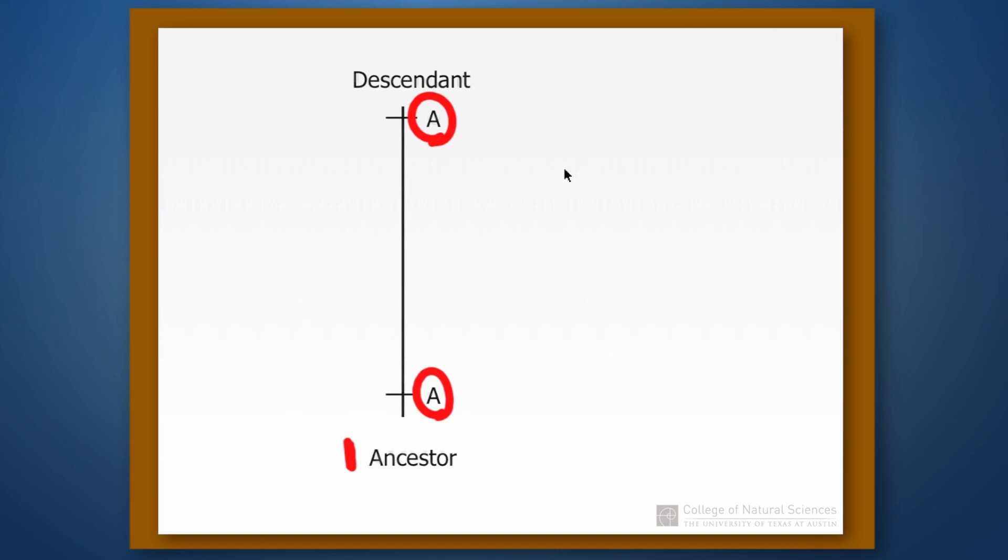Where parsimony would fail is if there were a lot of changes taking place on this branch. So for example, if big A and the ancestor then evolved to little a, and then after that evolved to A prime, and from A prime back to big A, and then to alpha, and then to little a, and to alpha, and then back to big A.